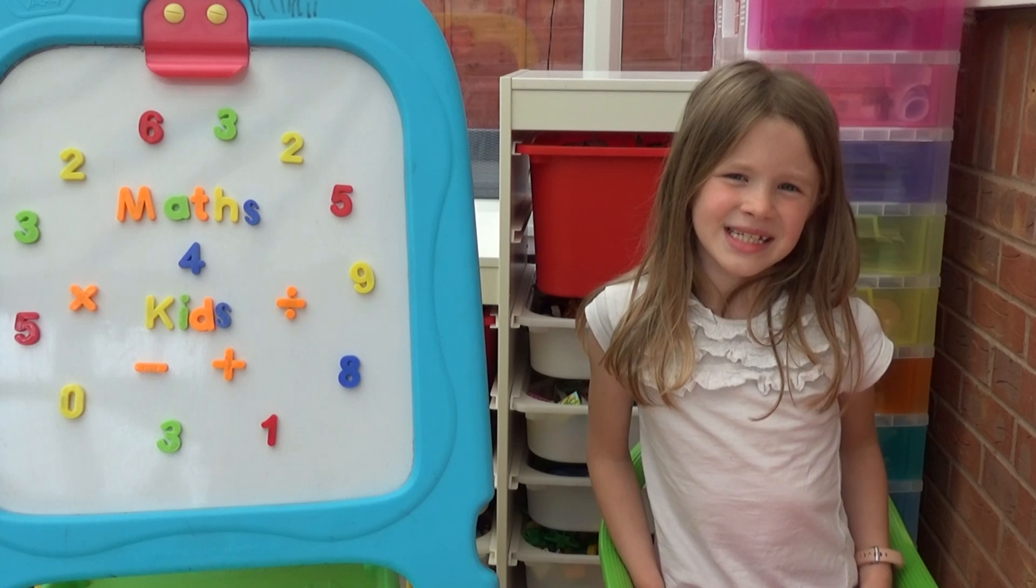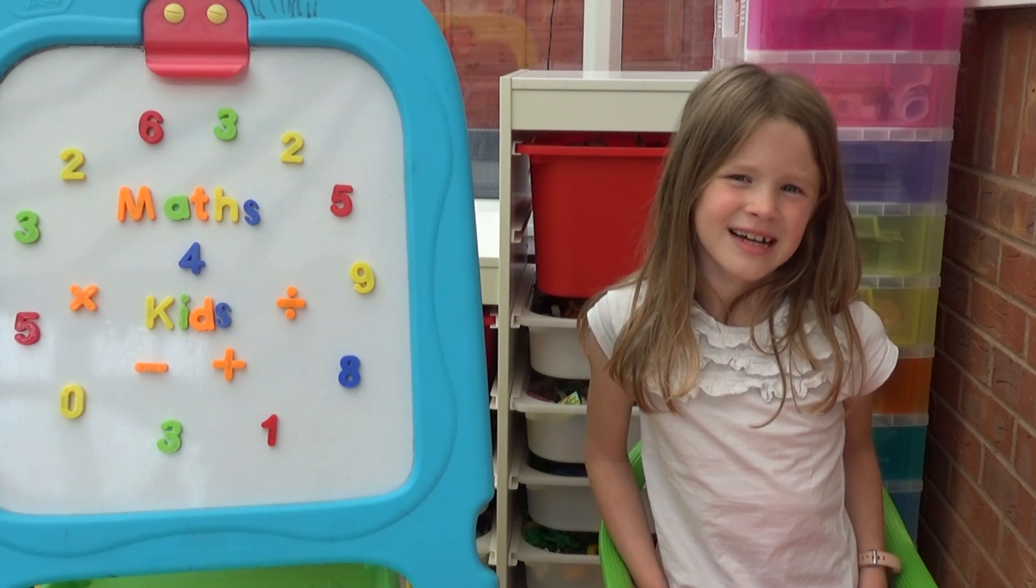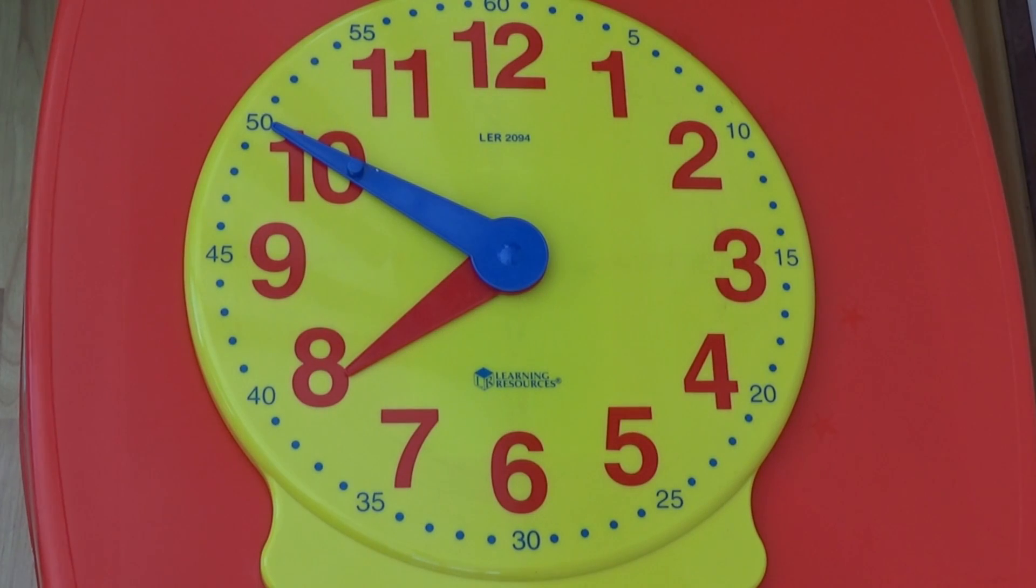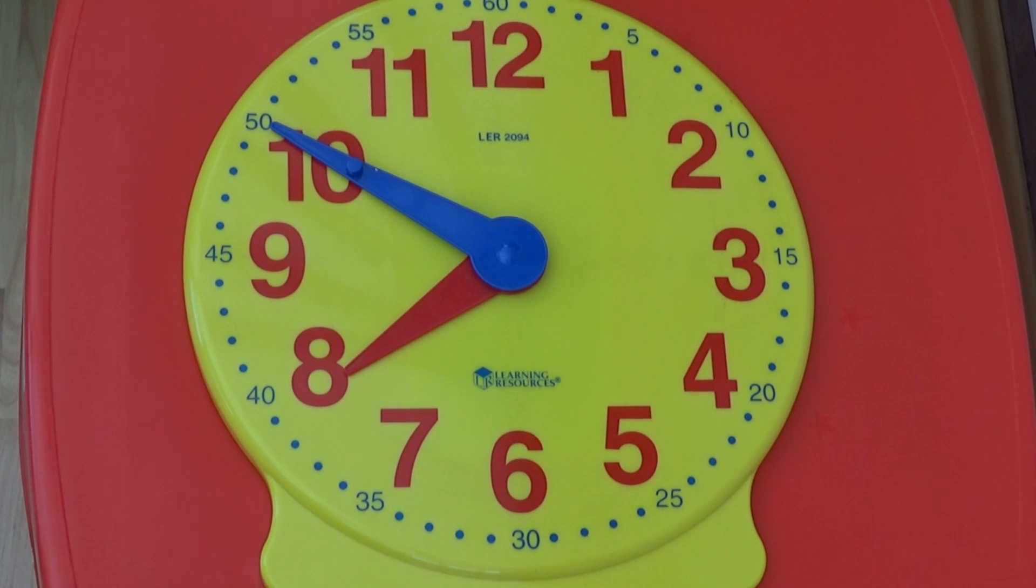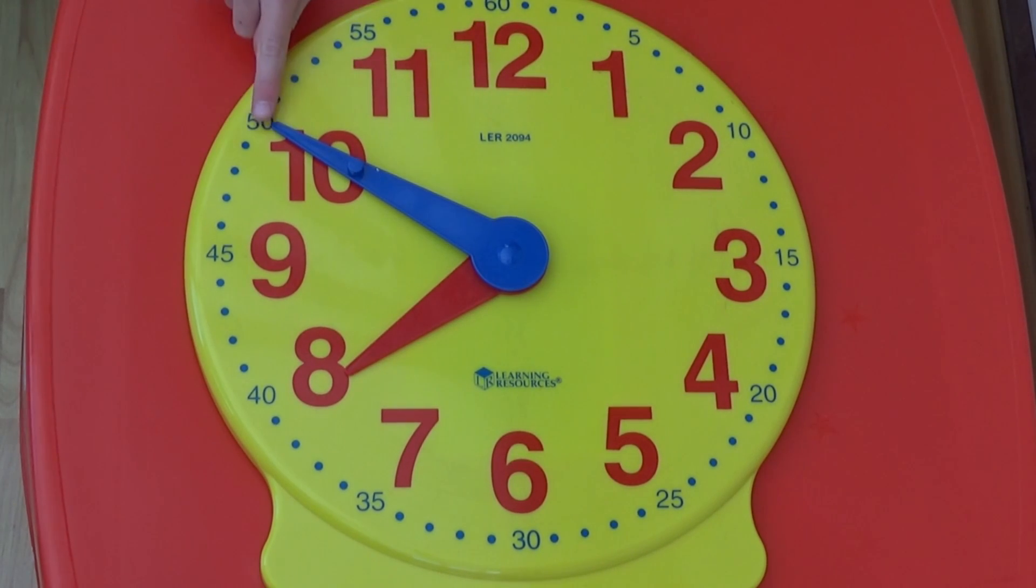Now we are going to look at minutes to on an analogue clock. This time the hour hand is pointing at between the 7 and the 8. It is closer to the 8 so we know the time in analogue will be something minutes to 8. The minutes hand is pointing at the 10 minutes to. So in analogue the time is 10 minutes to 8.